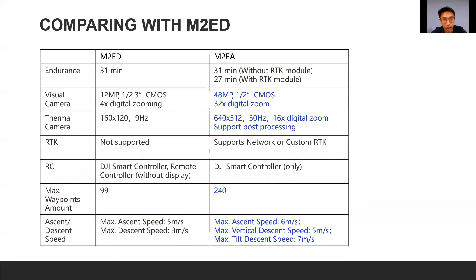The M2EA also supports the new RTK module, but bear in mind this RTK is not for survey-grade mapping — its main purpose is to hold very accurate position for the drone, unlike the Phantom 4 RTK which is made for survey-grade mapping work. The M2EA only supports the Smart Controller. Waypoint internal memory has also greatly increased from 99 to 240. Ascent speed is now 6 meters per second and descent speed is 5 meters per second.